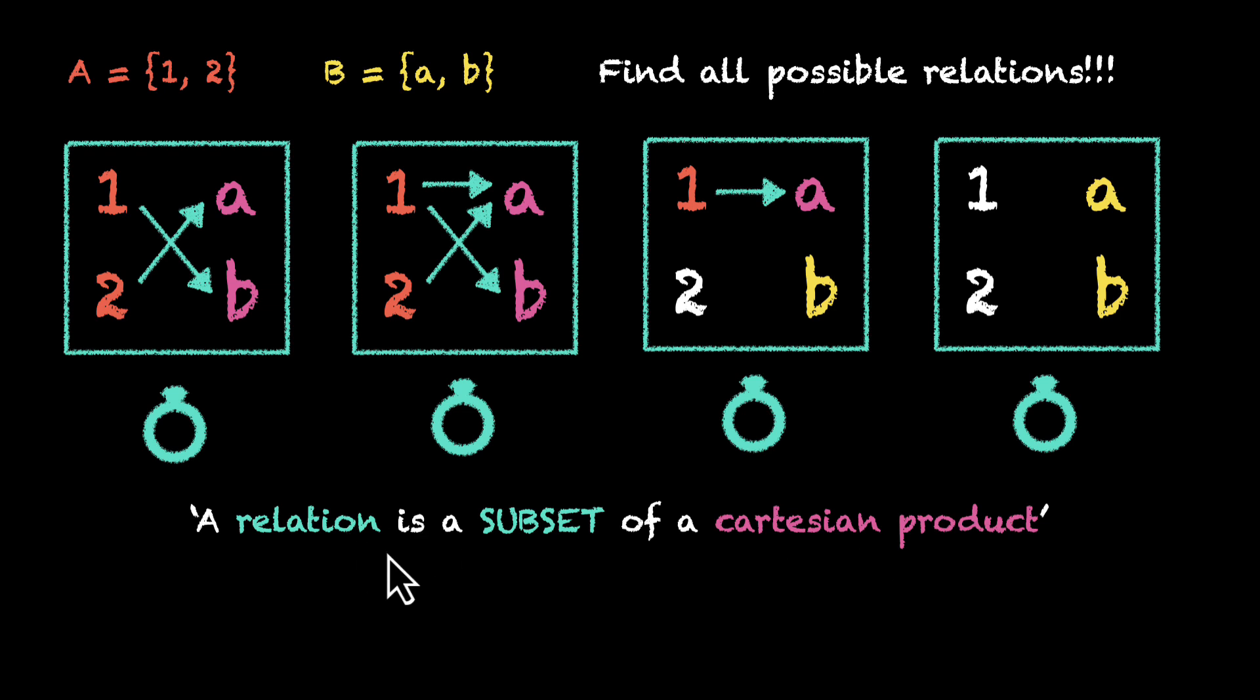Remember that a relation is a subset of a Cartesian product. The Cartesian product of A and B will have a lot of subsets. One of them will also be the empty set. Because empty set is a subset of all other sets, we can say that this relation, which is the empty set, is also the subset of the Cartesian product of A and B, which means this is also a relation.